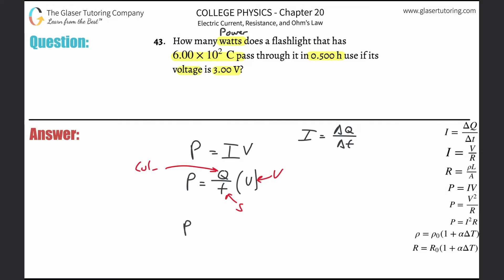So now all we need to do is simply plug in the values. And if we don't have the right units, we just do conversion. So they gave us the charge in coulombs, 6.00 times 10 to the two divided then by the time that's got to be in seconds. So how many seconds are in a half hour? Just simply multiply that by 3,600 because there's 3,600 seconds in an hour. So half of this would represent the amount of seconds in half an hour. And then multiply that by three volts. And voila.